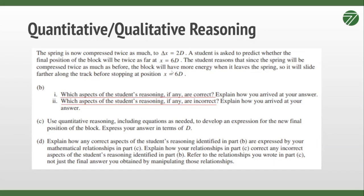So you have to look at what about their reasoning is correct and which aspects are incorrect. The student reasons that since the spring will be compressed twice as much as before, the block will have more energy when it leaves the spring, so it will slide further along the track before stopping at position 6D. So you would say the student is correct in that compressing it further would give it more energy and therefore it's going to travel further.